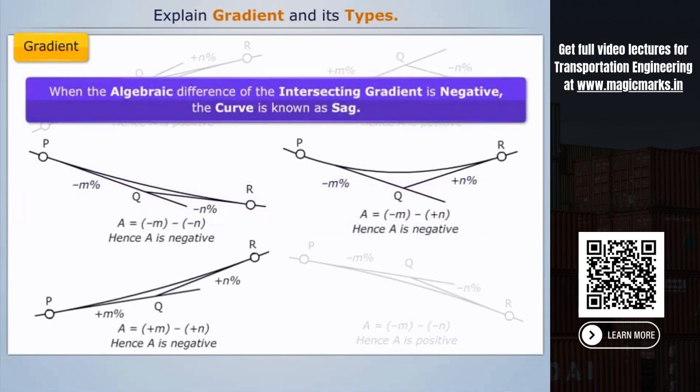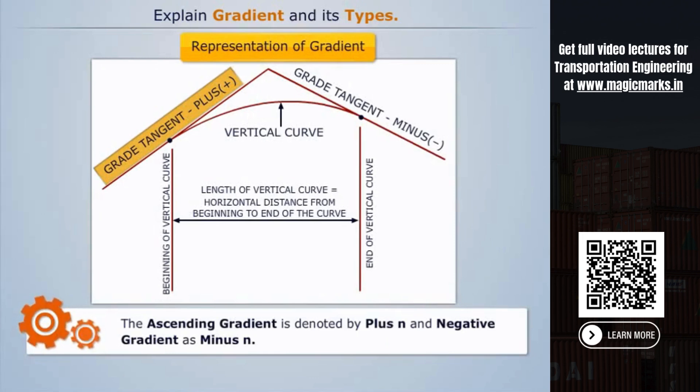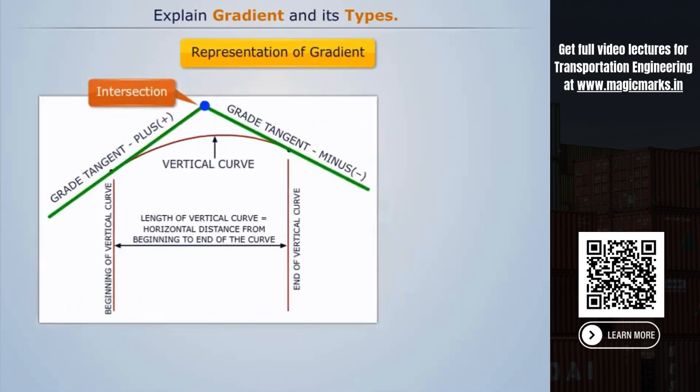When the algebraic difference of the intersecting gradient is negative, the curve is known as a sag curve. The ascending gradient is denoted by plus n and negative gradient as minus n. At the intersection of gradients, the algebraic difference between two grades gives the angle which measures the change of direction.